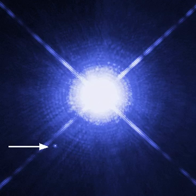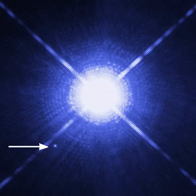For a non-rotating white dwarf, the limit is equal to approximately 5.7 divided by μ_E² solar masses, where μ_E is the average molecular weight per electron of the star. As carbon-12 and oxygen-16, which predominantly compose a carbon-oxygen white dwarf, both have atomic number equal to half their atomic weight, one should take μ_E equal to 2 for such a star, leading to the commonly quoted value of 1.4 solar masses.